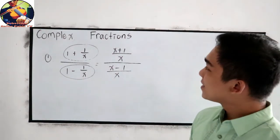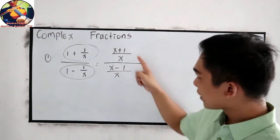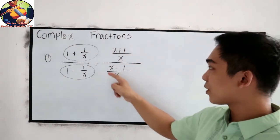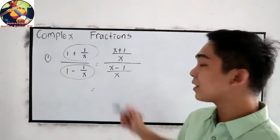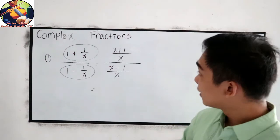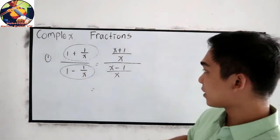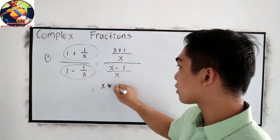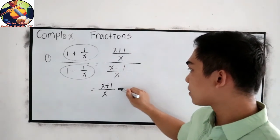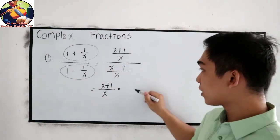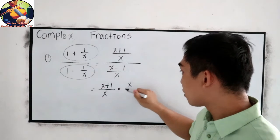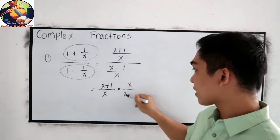Now notice that we have a single term in our numerator and our denominator. So apply the rules in division of rational expression. Copy our numerator, x plus 1 over x, times, copy the denominator, then reciprocal, x over x minus 1.